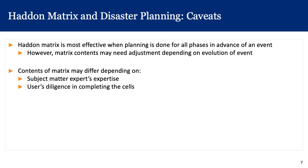A key caveat is that the Haddon Matrix is most effective when planning is done for all phases in advance of the event. We should not wait for an event like a radiological dirty bomb to play out before filling out all the cells completely. We can always modify the matrix as we learn more, but it's important to plan for pre-event, event, and post-event phases even before a disaster occurs. The contents of the matrix may also differ depending on subject matter experts' degree of expertise and diligence.